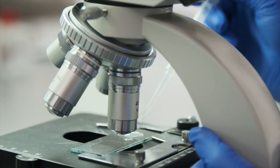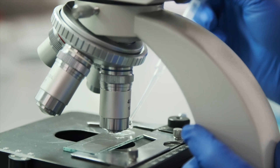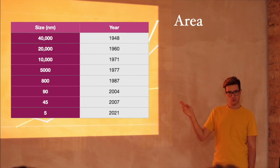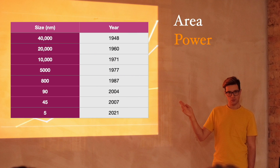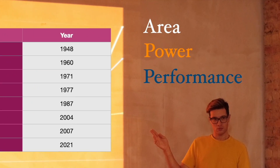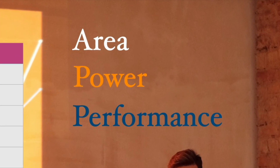The shrinking of transistor size in VLSI design has a significant impact on three key aspects: area, power, and performance — in short, PPA. These factors can be described using mathematical equations.